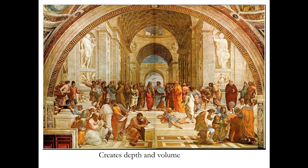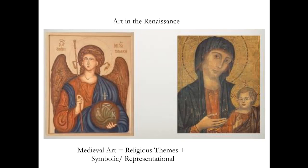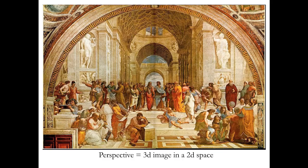Go back to our medieval art. Take our two paintings — one of St. Michael, one of the Holy Family. None of them have depth. You don't really get how wide, how far back, how much weight these characters have. They're humans, but they're flat. Whereas in the School of Athens, not only do the people have weight and mass, but the rooms have weight and mass. You know how far back it goes.